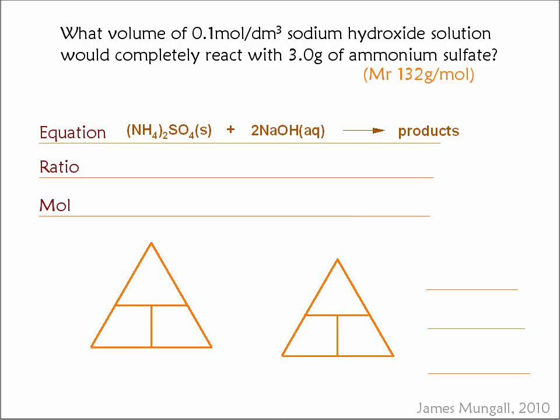So let's go through the calculation itself. You're also given in the question the relative formula mass of the ammonium sulfate and the balanced equation. Now the balanced equation, you can see that the ammonium sulfate reacts in a 1 to 2 ratio with the sodium hydroxide. So if I can work out the number of mole of the ammonium sulfate, then I can work out the number of mole of the sodium hydroxide by multiplying by 2.